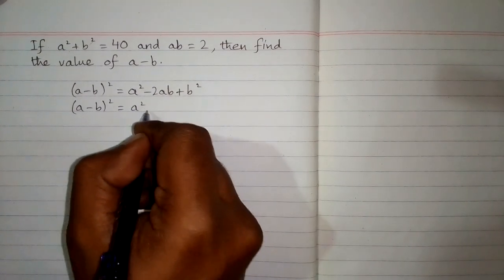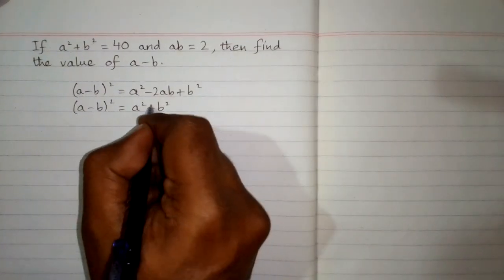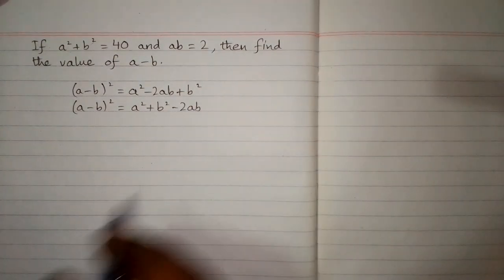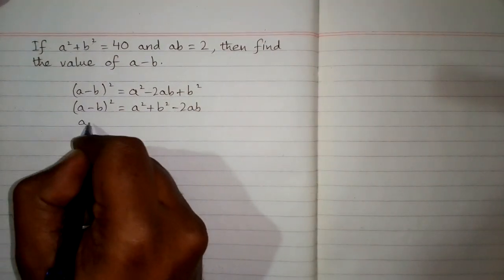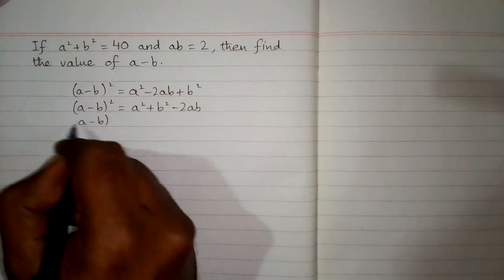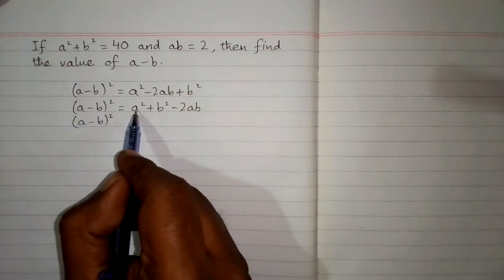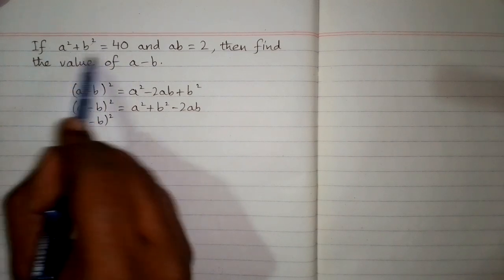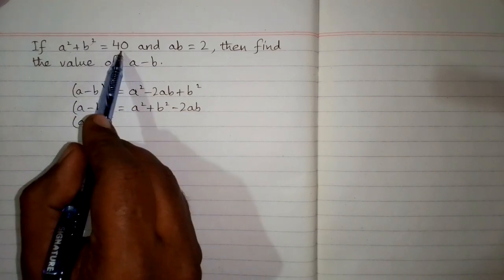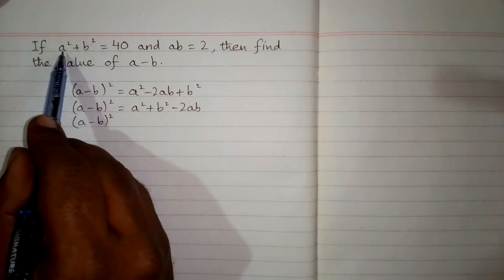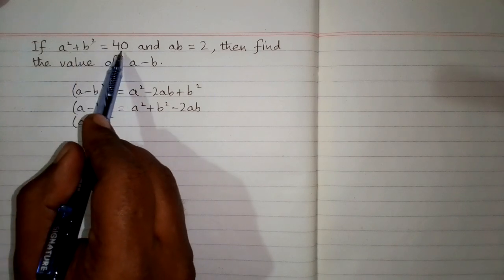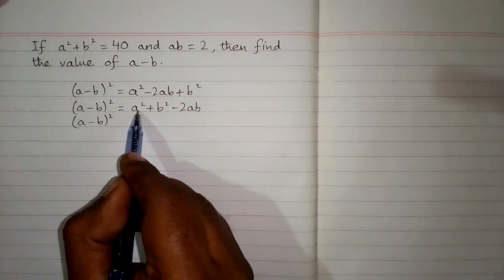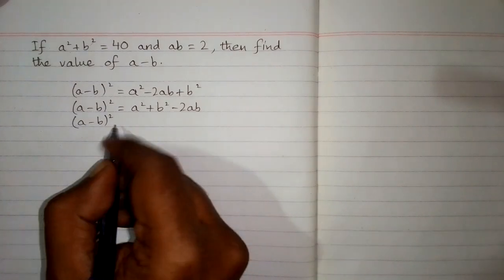We can see that the value of a squared plus b squared is given in this question, which is 40. So we have a squared plus b squared equal to 40, and we can substitute 40 in place of a squared plus b squared.